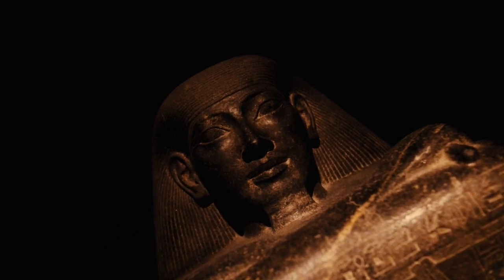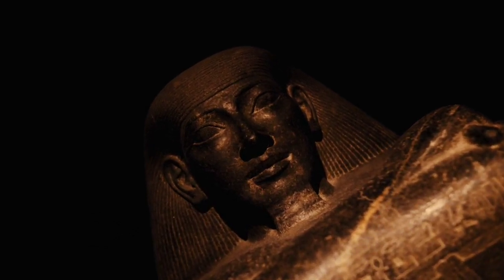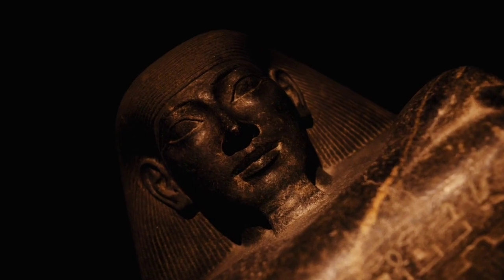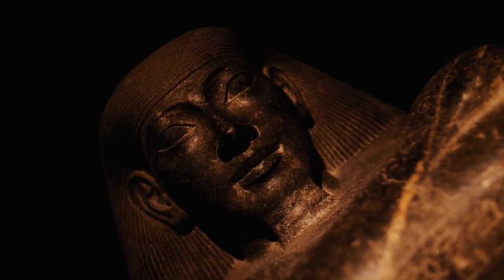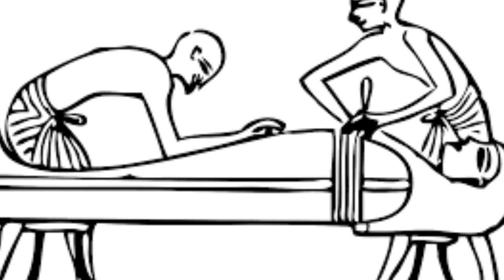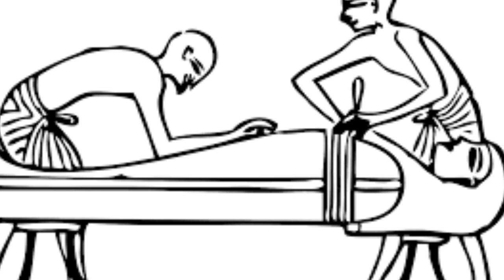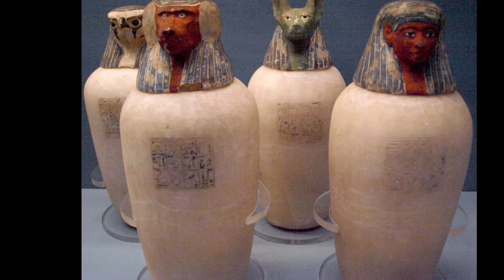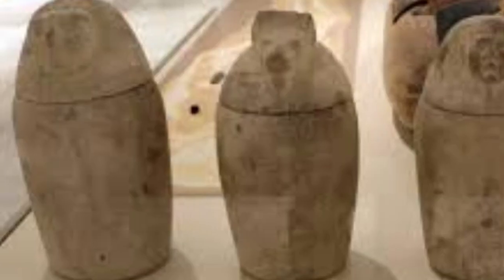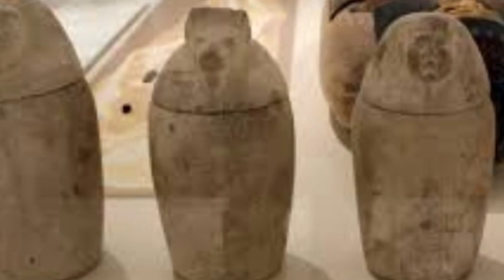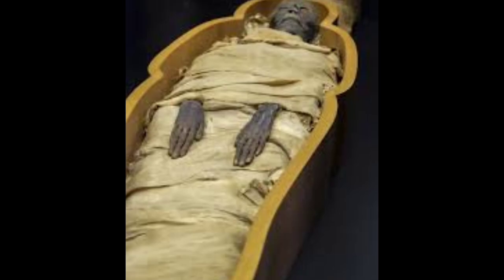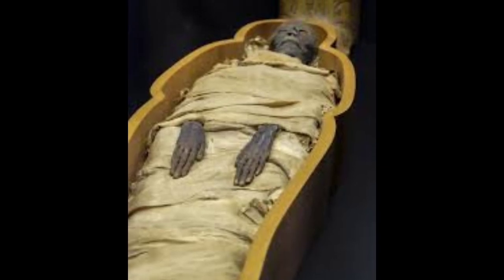The earliest evidence of mummification dates back to the Old Kingdom period, around 2686 to 2181 BCE. During this time the body was treated with natron, a type of salt, to dry out the tissues and prevent decay. The organs were removed and placed in canopic jars, and the body was wrapped in linen bandages.